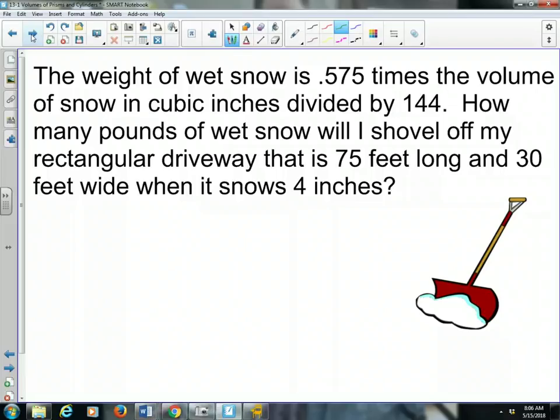Here's another one. The weight of wet snow is 0.575 times the volume of snow in cubic inches divided by 144. What a formula. So the weight of wet snow is 0.575 multiplied by the volume of the snow divided by 144. And this is a real formula. It's not just something that's made up. If you want to find out how much weight is in your driveway, you could use this same formula. So what we need to find, class, then, is we've got to find the volume.